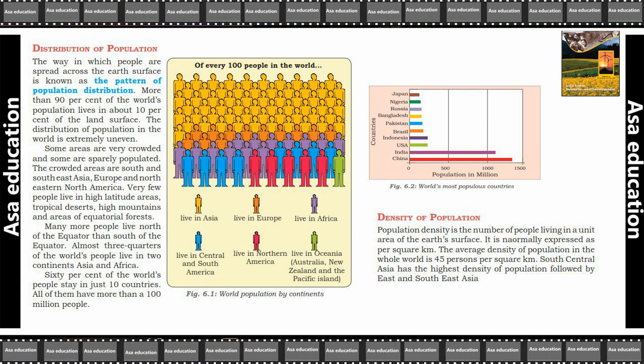Sixty percent of the world's people stay in just ten countries. Sixty percent loog poori dunya mein khali 10 countries mein rehti hain. All of them have more than 100 million people. Or in sub countries mein lagwag 100 million se zahadha loog rehti hain.